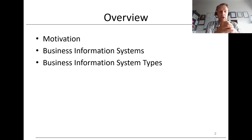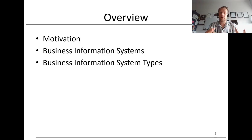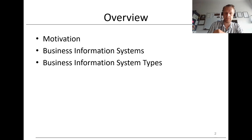Here you can see the overview of this first part. We're going to talk about the motivation for the usage of Business Information Systems as strategic enablers of an organization first. Then we're going to define Business Information Systems and look at its various components. To conclude this first part, we're going to talk about different types of Business Information Systems. So let's get started.